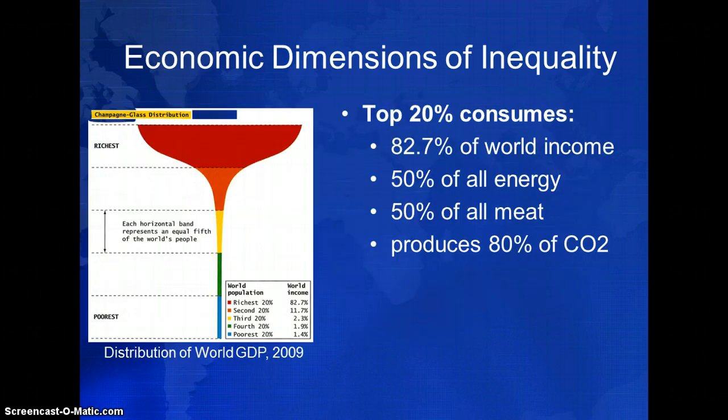Today, the top 20% of the world's population control 80% of the world's income, consume half of all energy used, eat half the meat produced in the world, and are responsible for 80% of all CO2 emissions.